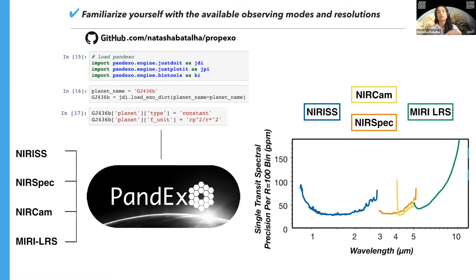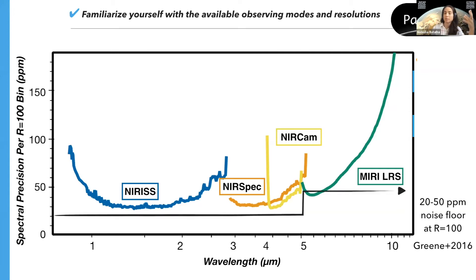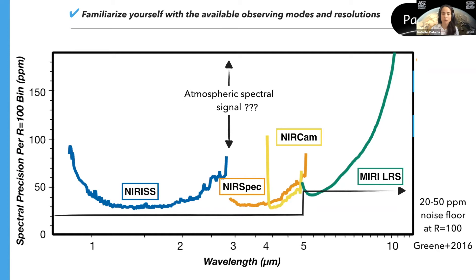Let's look at this precision plot a bit more in depth. The reference that people use for gold-standard precision is the 20 to 50 ppm noise floor cited in Tom Greene's 2016 paper. Just from that, we can immediately see that this target is going to have high potential for atmospheric success. Of course, the big question that still remains is what the atmospheric signal actually is — and that's going to set the SNR. This is where the radiative transfer models come into play.